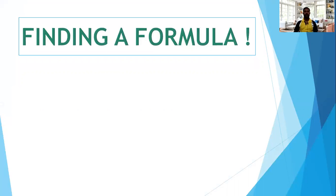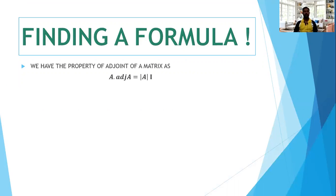Let us find a formula to find the inverse of a matrix. We have the property of the adjoint of a matrix: for any square matrix A, A into adjoint A is equal to determinant A into I.